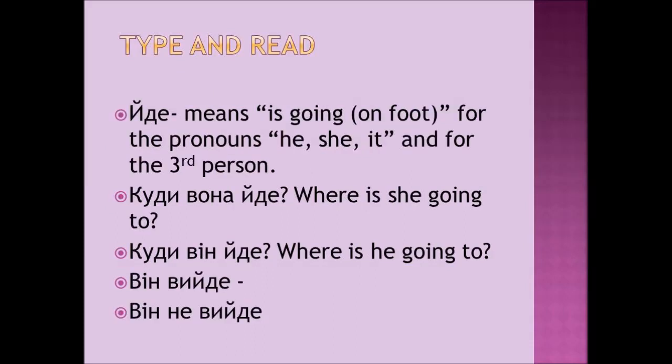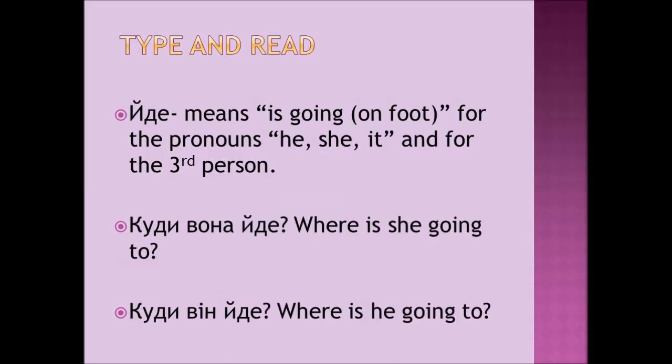Also, let's expand this type of phrase. There is a word ІДЕ. ІДЕ means 'is going on foot.' It is used for the pronouns he, she, it, and for the third person. Let's see the examples. КУДИ ВОНА ІДЕ? — Where is she going to? КУДИ ВІН ІДЕ? — Where is he going to?